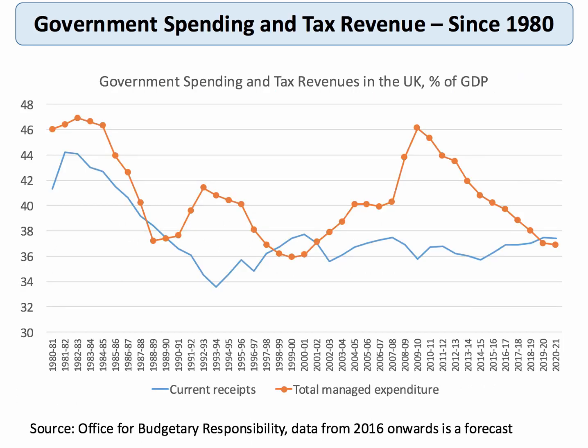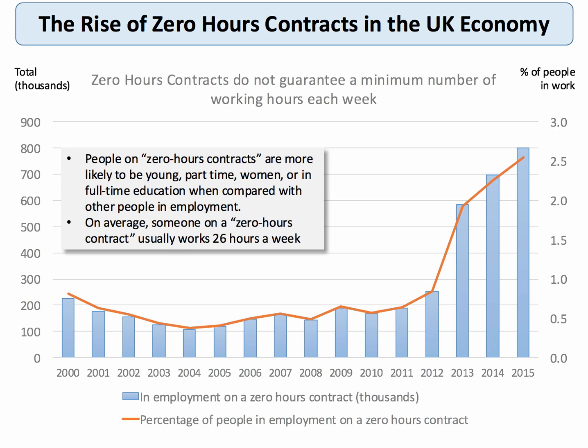One aim of the Conservative government is to bring down the level of government spending as a percentage of GDP. In 2010, government spending was nearly 46% of GDP, with a big budget deficit because taxes were 10% less than that. The government has been cutting government spending as a share of GDP and is aiming to get it below 40%, with a possible budget surplus in 2019.